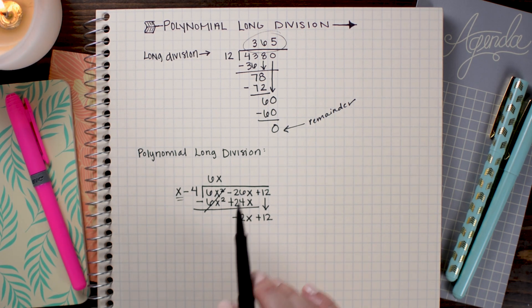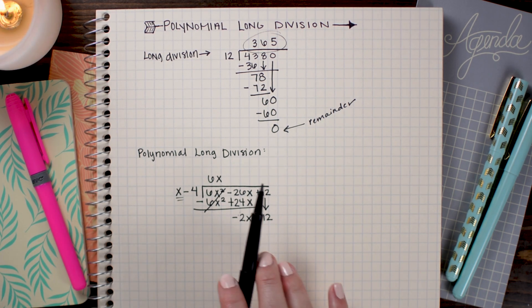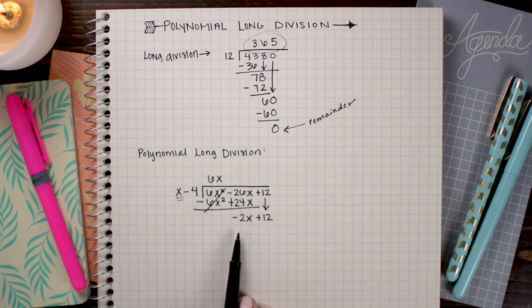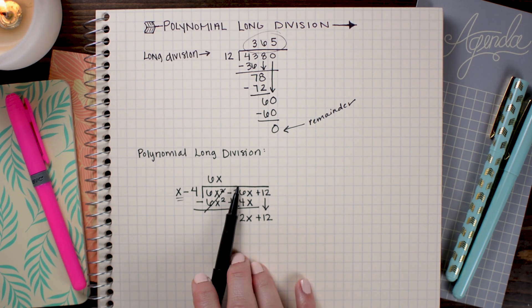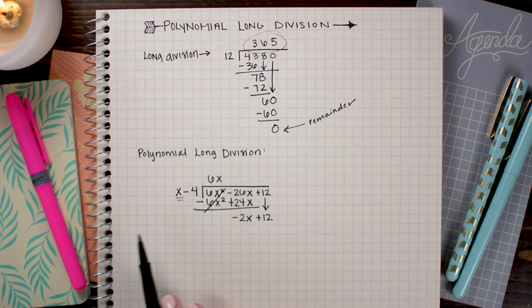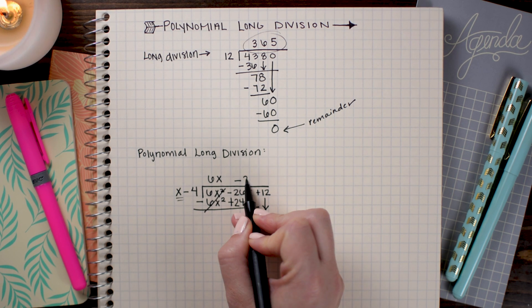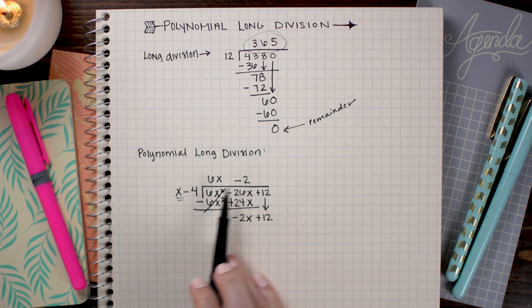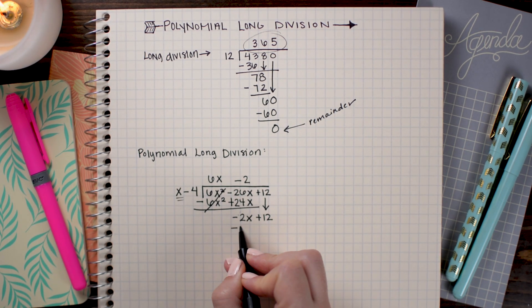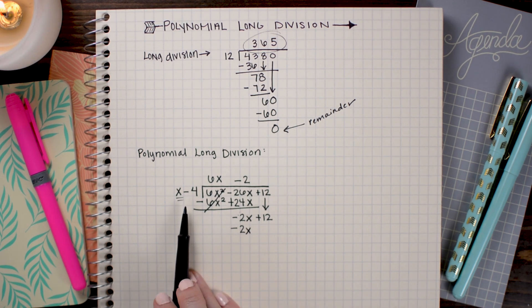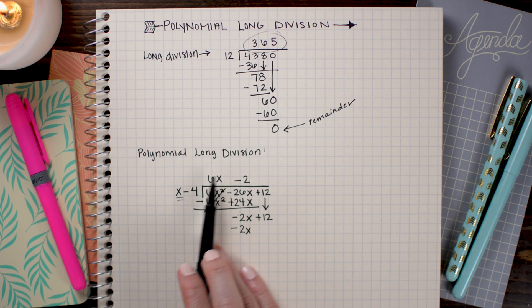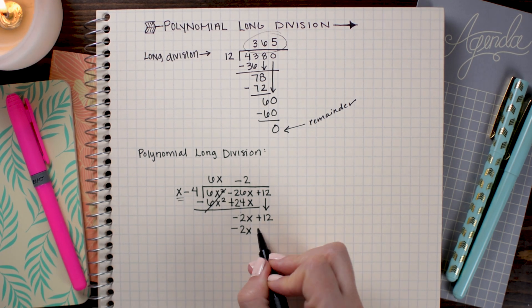And we're going to repeat the exact same process. So I want to see what multiplied with x gives me -2x. Or in other words, -2x divided by x equals what? And when I do that, I need a -2 here. So -2 times x is -2x. And then I'm also going to multiply that with the -4. So -2 times -4 is positive 8.